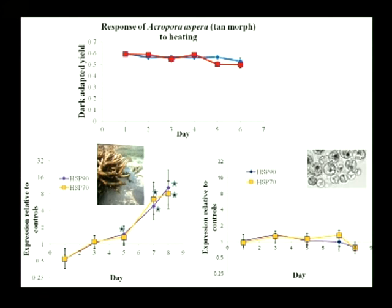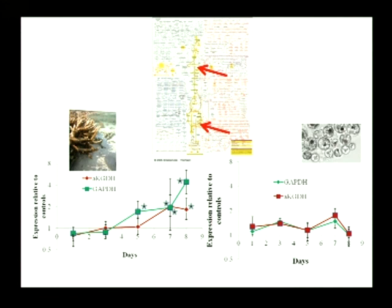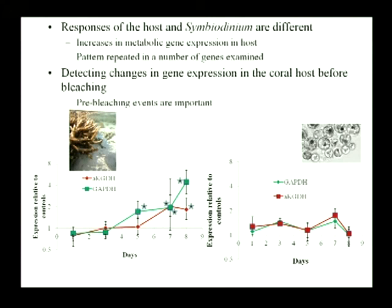We wanted to extend beyond these stress response genes into metabolism. We looked at some metabolic genes previously mapped from symbiodinium and also available from the coral literature, to see how the metabolism of the two partners was behaving. Looking at alpha-ketoglutarate and GAPDH — glyceraldehyde-3-phosphate dehydrogenase — as we increased temperature we got an increase in the expression of these two genes in the coral host, indicating probably greater metabolic rates. But again, looking at the response for symbiodinium, we didn't see that pattern at all. So we seem to be getting responses in the coral at the transcriptomic level much earlier than from symbiodinium, and this pattern was repeated in a number of genes that we looked at. We seem to be detecting changes in gene expression in the coral host before we get bleaching, indicating these pre-bleaching events may be important.